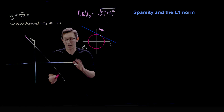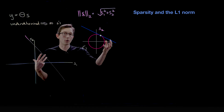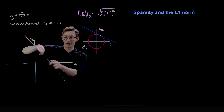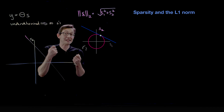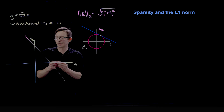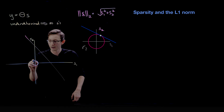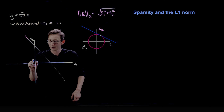This line represents all the s's that satisfy the equation. When we want the minimum two-norm solution, we're looking for the specific s on this line that minimizes the norm. I start with little circles — all points with equal two-norm, equal radius — and I grow them until they just intersect the line.